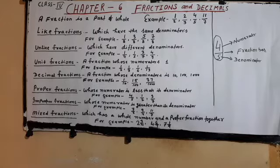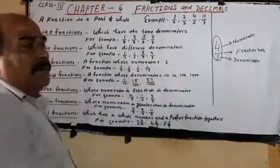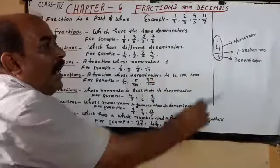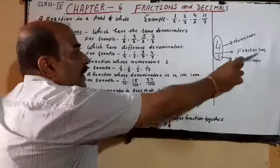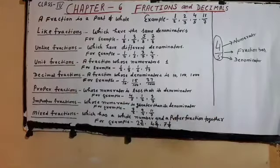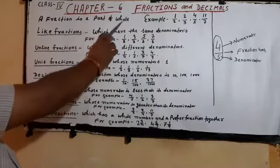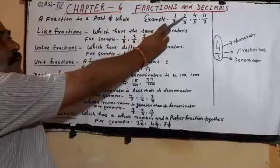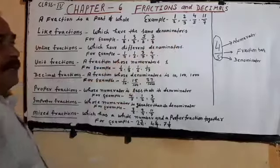The first thing we have to know: they are given 4 and 4 by 5. Here, 4 is the numerator and 5 is the denominator, and this is the fraction mark. Now I want to know, what is a fraction? A fraction is a part of whole. For example, 1 by 2, 2 by 3, 4 by 5, 11 by 7.